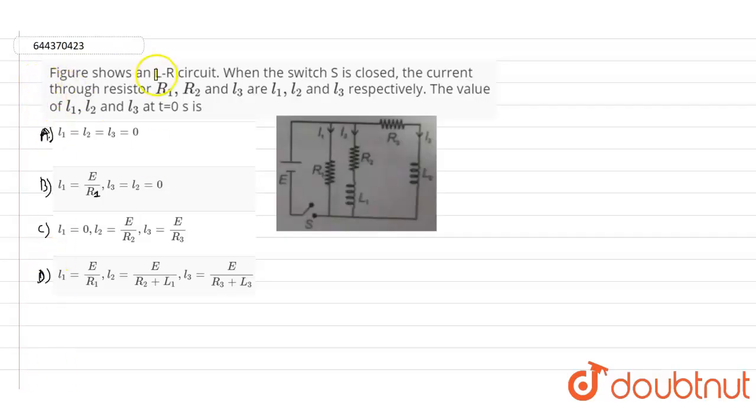So here in this question, it is given the figure shows an inductor and resistor circuit, LR circuit, when the switch S is closed. The current through the resistors R1, R2, and R3 are written as i1, i2, and i3 respectively.